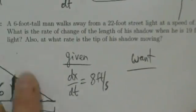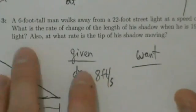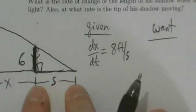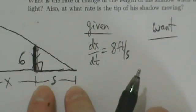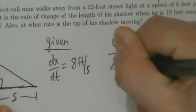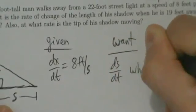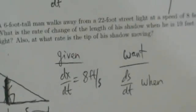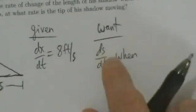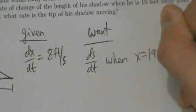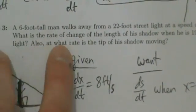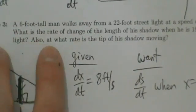We want two things. First, the rate of change of the length of his shadow — that's ds/dt — and we want it when the guy is 19 feet away from the light, meaning when X equals 19 feet.